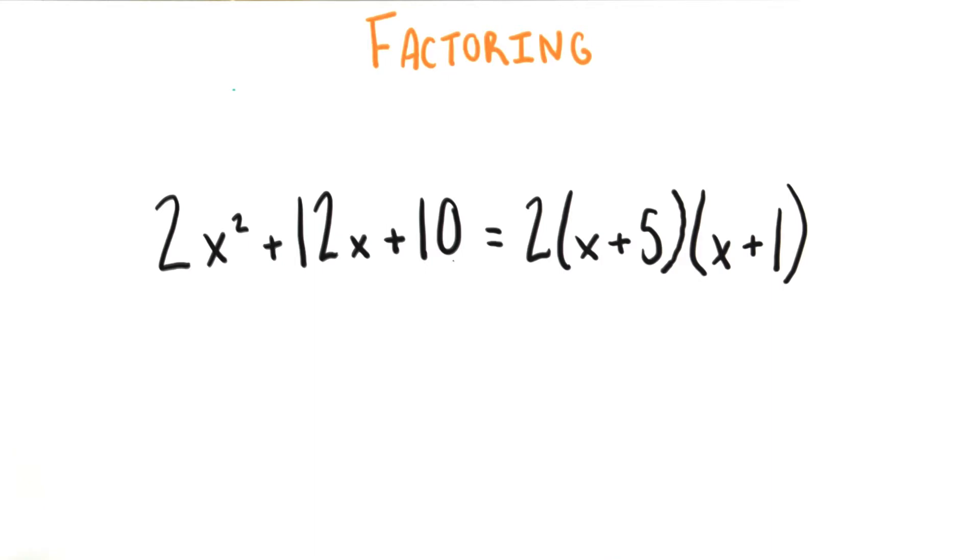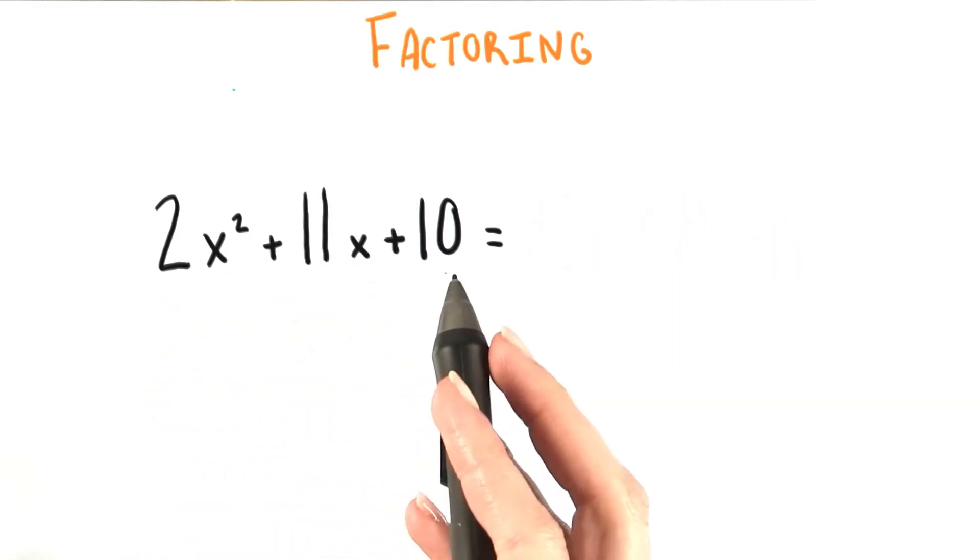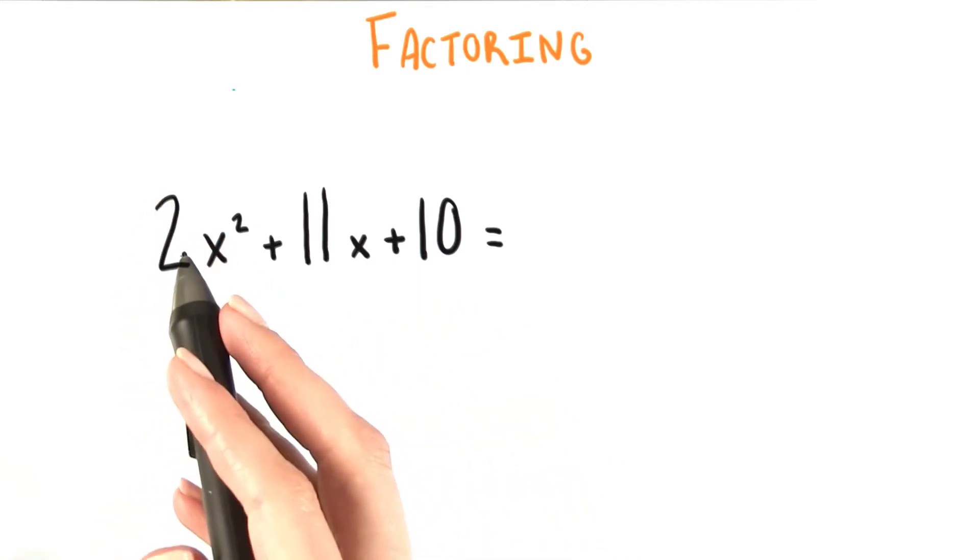But you can imagine that for some polynomials whose coefficients in front of the x² term aren't 1, this won't be the case. Let's say for example that we had an 11 here instead of a 12. Then we can no longer begin the problem by dividing all the terms by this 2.